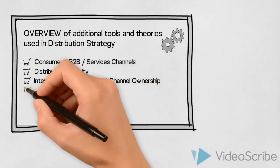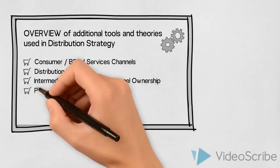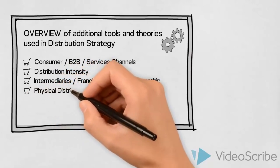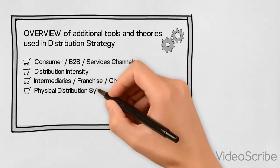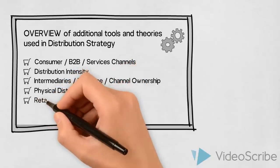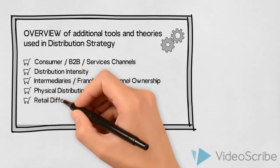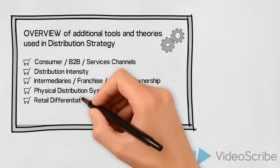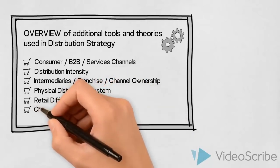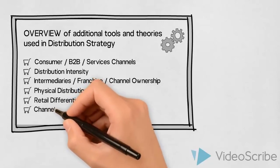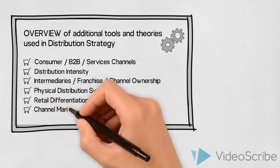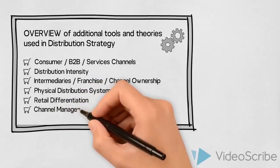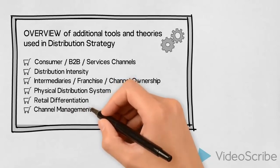We should also look at the physical distribution system, which would include decisions on transportation of goods, inventory issues, and order processing procedures. If we're dealing with retail, we could also look at the process of retail differentiation. Finally, we should also look at how we could manage the relationships with our chosen distribution channels so that it remains prosperous for both us and for the different parties within the channel.